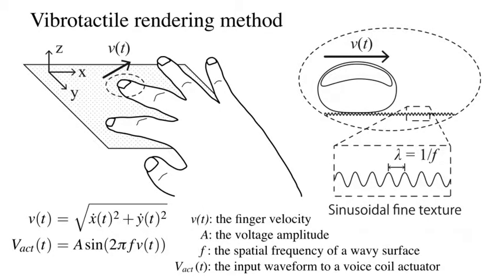Voice coil actuators mounted on fingers generate vibrotactile stimuli. The input waveform is modulated according to the finger velocity and the spatial frequency of a wavy surface.